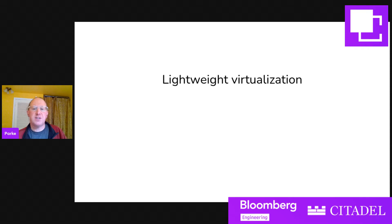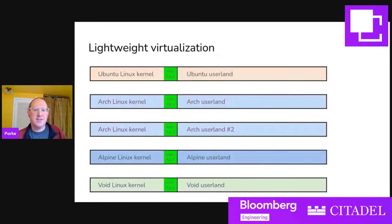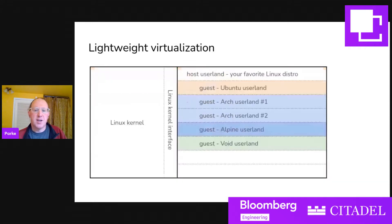Let's talk about lightweight virtualization. Say we have five Linux computers — each consists of a kernel and a userland. We might have five of them because we want different userlands set up differently, to get packages from different Linux distributions. One aspect of each computer is identical: the interface between the kernel and the userland. The Linux kernel has a very consistent interface. So the question becomes: could we run all of these userlands on one Linux kernel? Several virtualization technologies let us do this, and LXroot is another one.